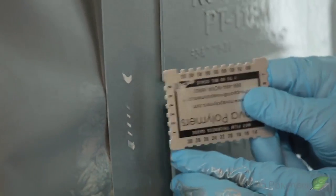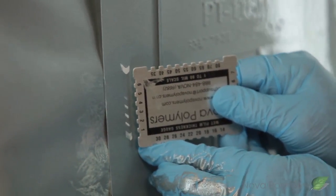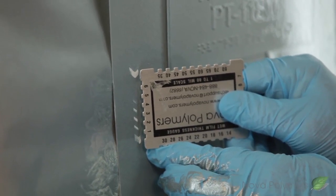You want to see at least 4 mils wet. Because 4 mils wet is going to dry to 1.5 to 2 mils dry. And that's what you want.